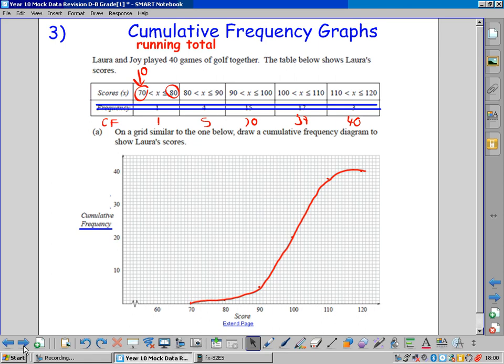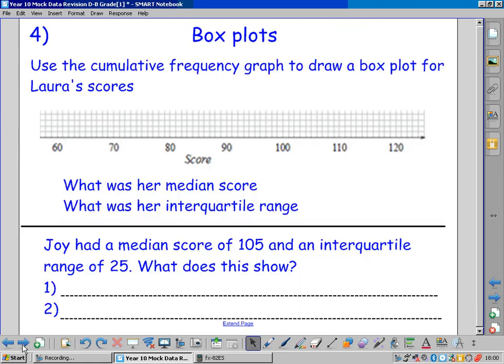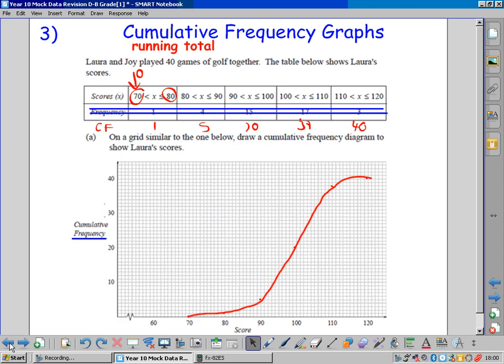We carry on, because we can use our cumulative frequency graph to draw a box plot. A box plot needs five things. It needs the lowest possible score. The lowest possible score is 70.